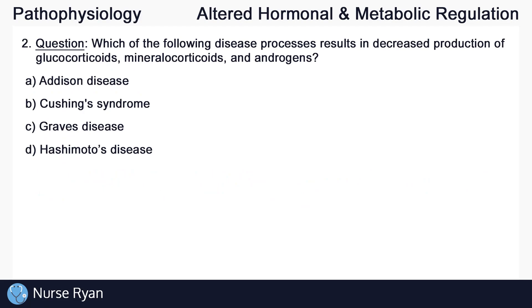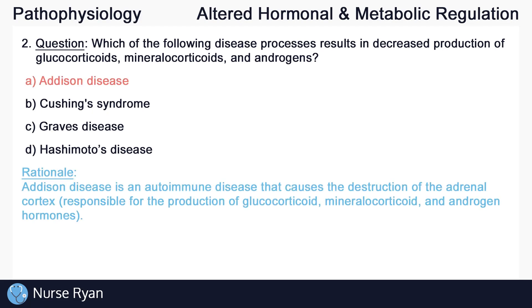Question number two: which of the following disease processes results in decreased production of glucocorticoids, mineralocorticoids, and androgens? This one is A, Addison disease. Addison disease is an autoimmune disease that causes the destruction of the adrenal cortex, which is responsible for the production of glucocorticoids, mineralocorticoids, and androgen hormones.